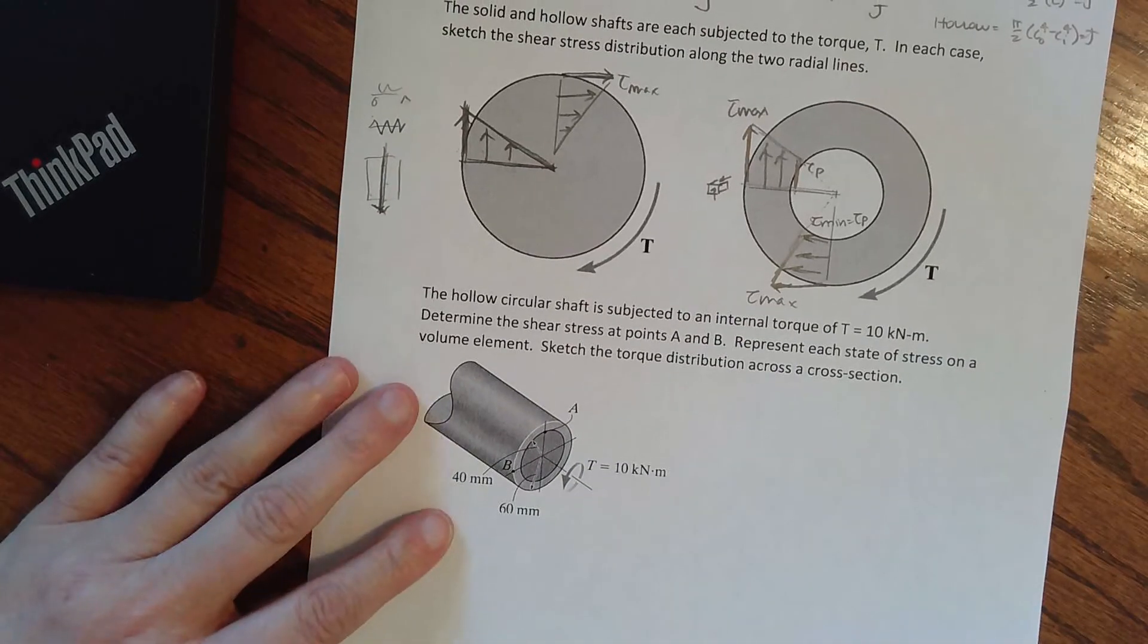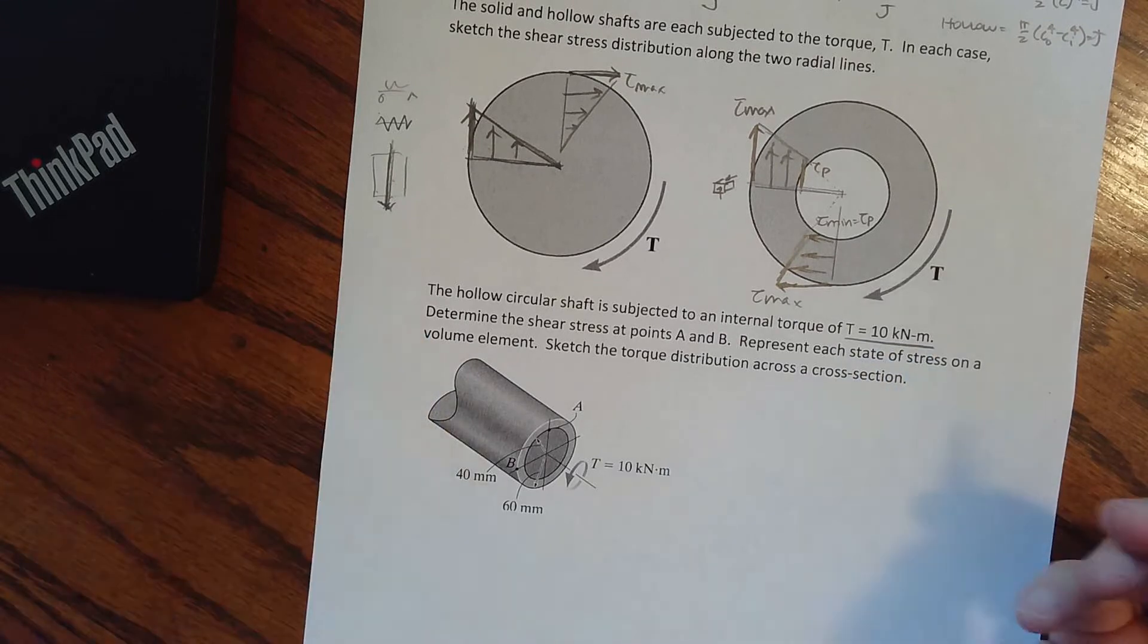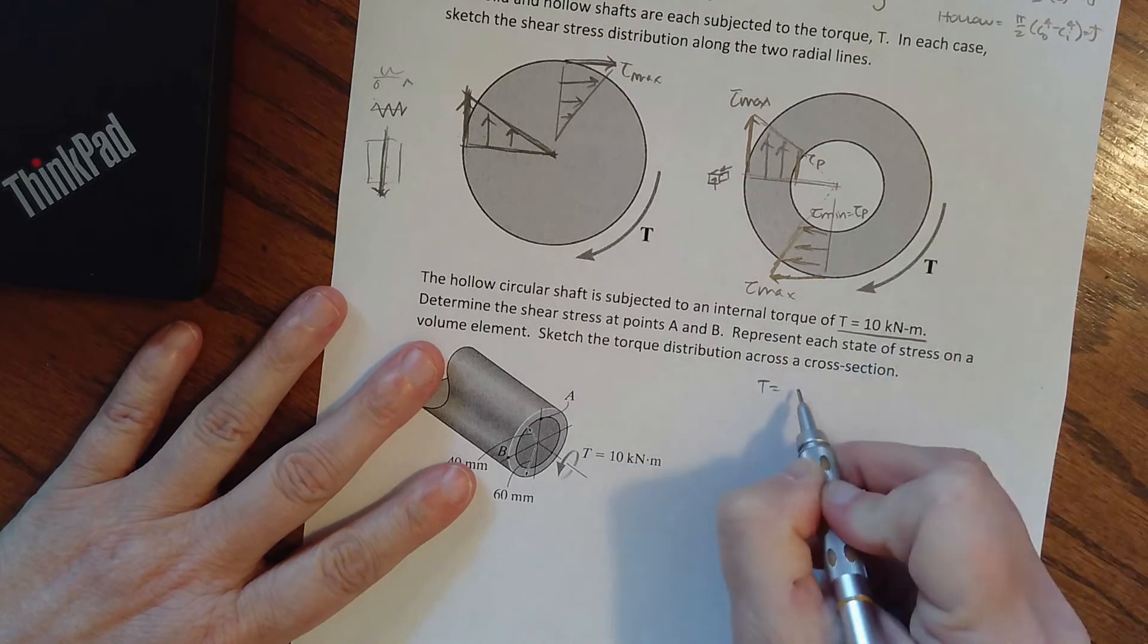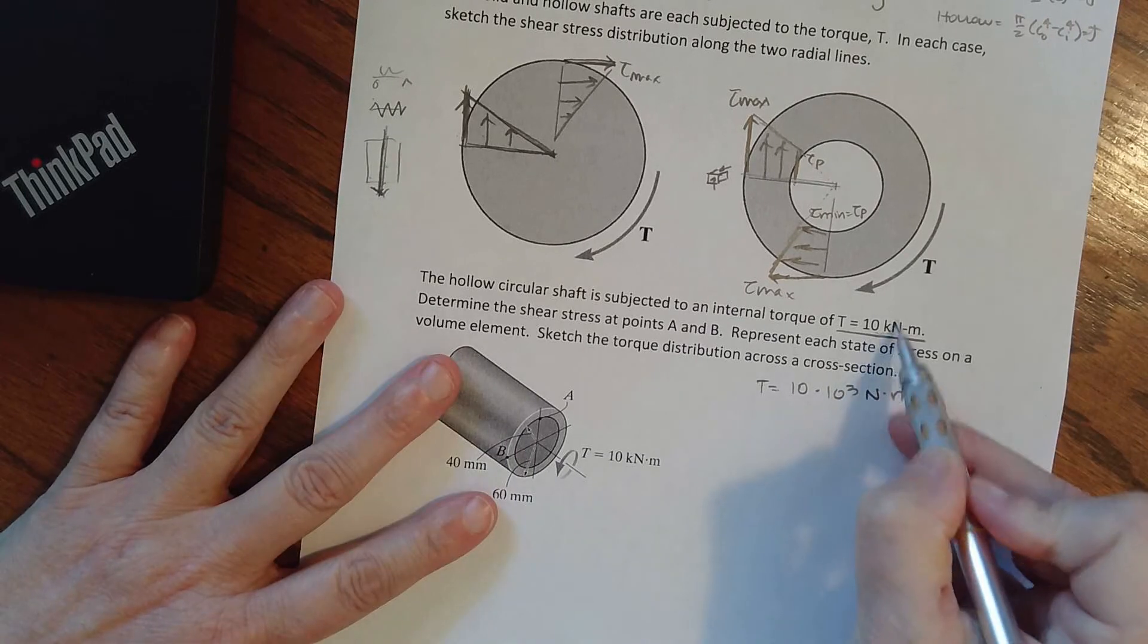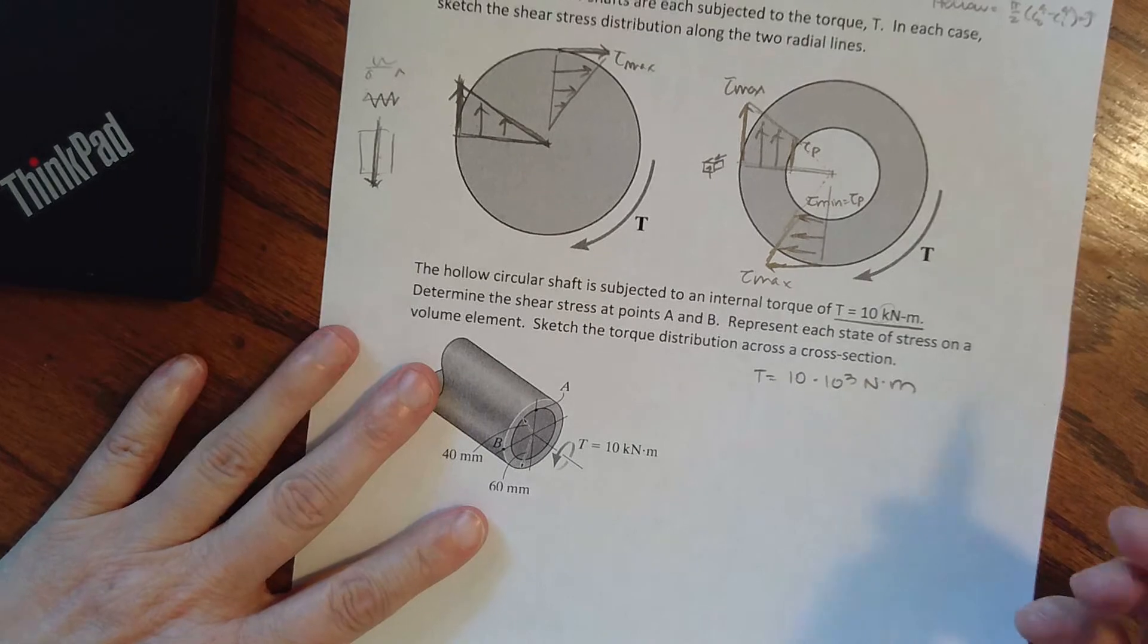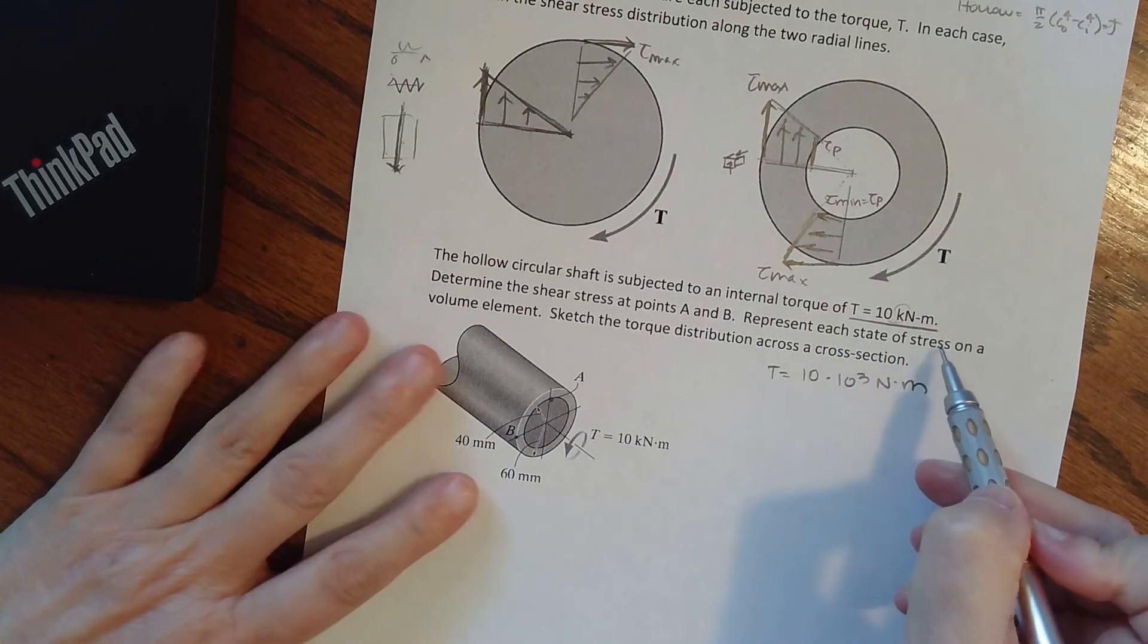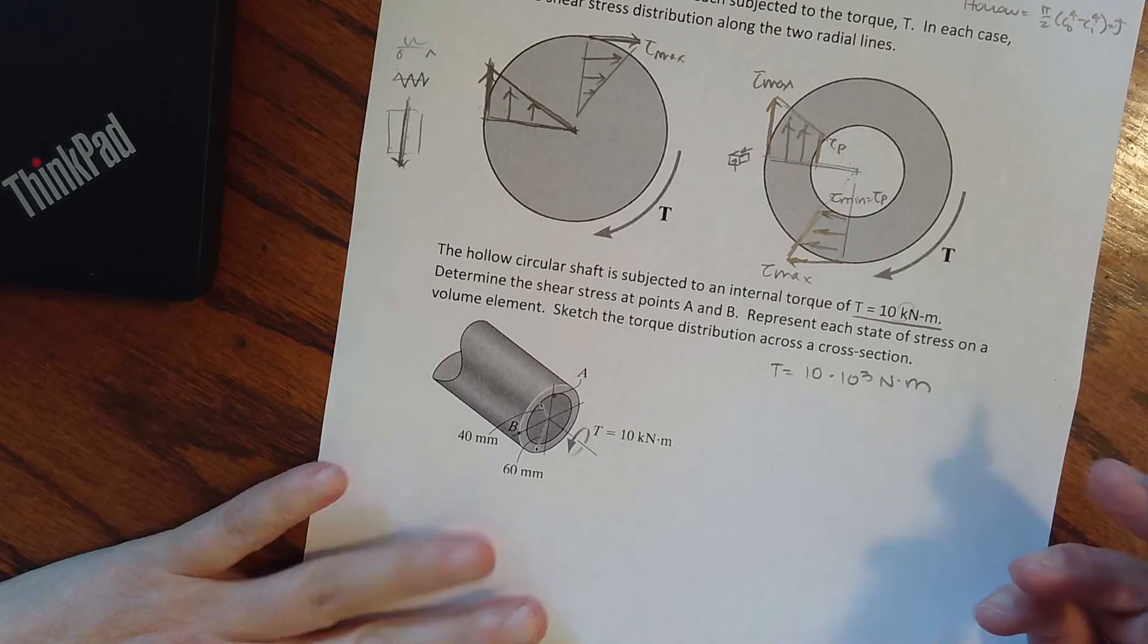So now let's put some numbers with this. The hollow circular shaft is subjected to an internal torque of, so they've already told us what the torque is, it's given. I like to rewrite this as 10 times 10 to the third newton meters, because that kilo, if I don't pay attention to my units, I am off by factors of large numbers. Determine the shear stress at point A and at point B. Represent each on a stress element. Sketch the torque distribution across the cross section.